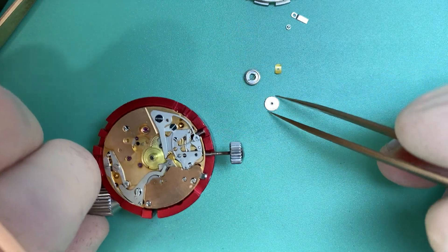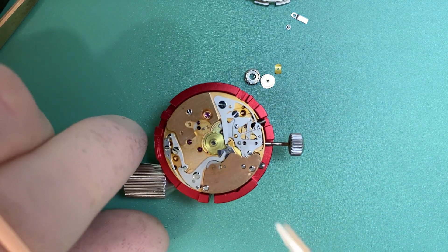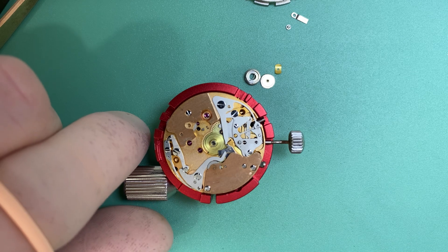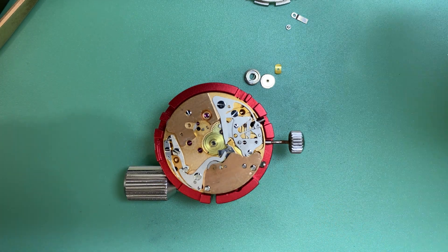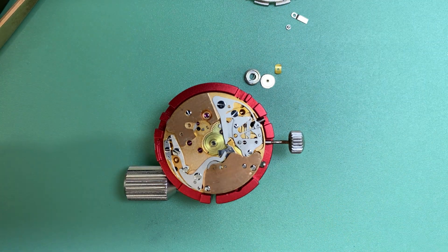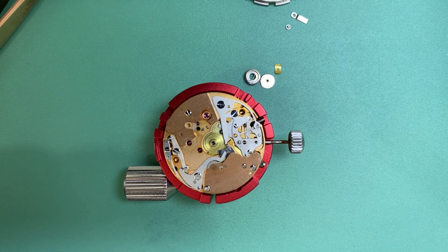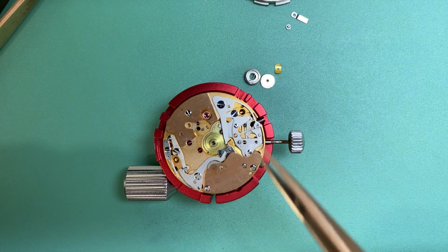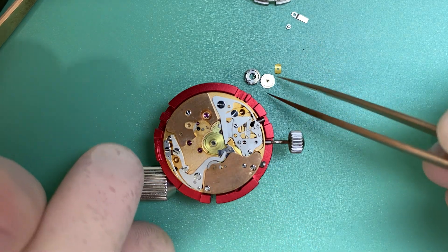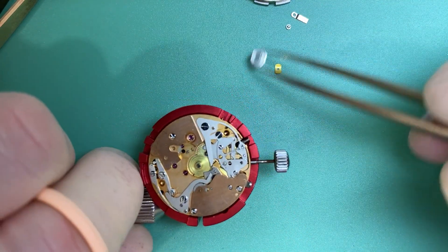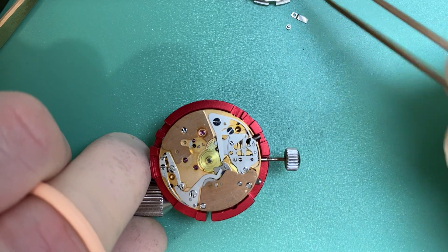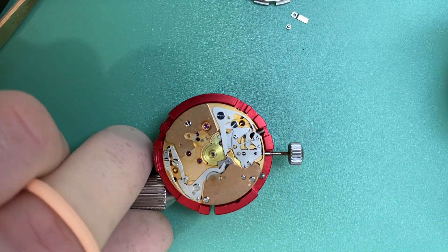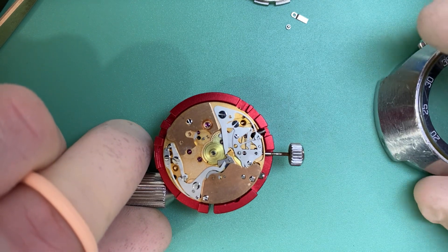So that is basically how the second time zone feature of the Flight Master works. It works very differently to any other second time zone or GMT watches out there today. It's one of my favorite second time zone watches to work on. I really love working on it. It's just a very cool watch and they have a cult following but they're fairly underappreciated in my opinion.